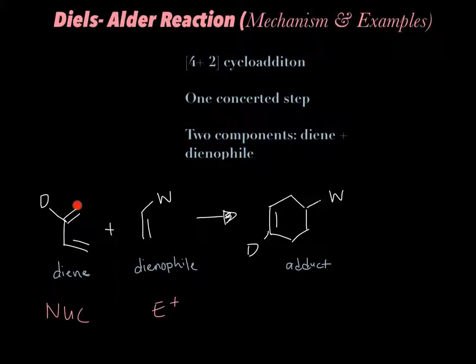The diene has 4 carbons and the dienophile has 2 carbons, and this ring structure also has a total of 6 carbons — these 4 carbons come from our diene, while these 2 carbons come from our dienophile. Also note that our dienophile usually contains electron-withdrawing groups to stabilize it and make it more electrophilic, and our diene contains an electron-donating group to make it more nucleophilic.